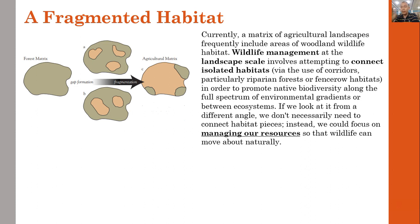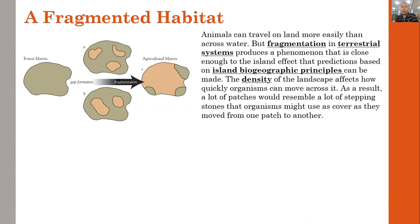From a different perspective, we don't necessarily need to connect the habitat pieces; instead, we could focus on managing our natural resources so that wildlife can move about naturally. Animals can travel on land more easily than across water, but fragmentation in terrestrial systems produces a phenomenon close enough to the island effect that predictions based on island biogeographic principles can be made. The density of the landscape affects how quickly organisms can move across it, with patches resembling stepping stones that organisms might use as cover as they move from one patch to another.